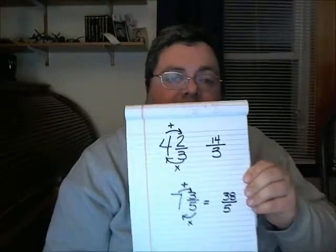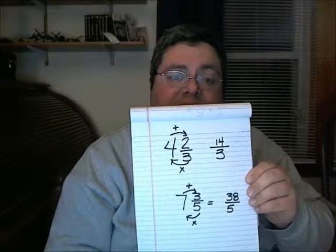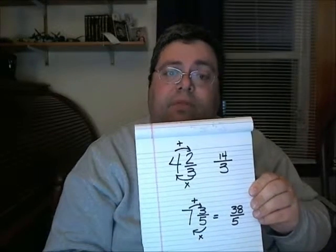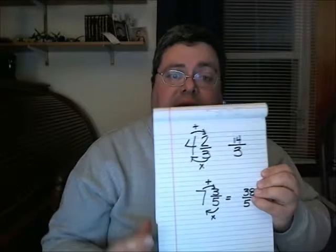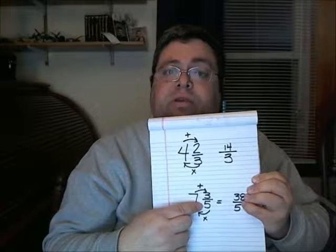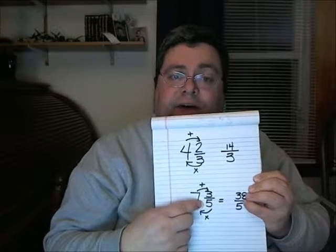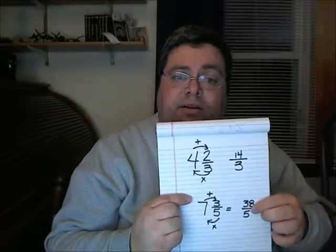Want to try another one? For this next one, let's do a little larger one. Let's try 7 and 3-fifths and see what you can come up with. You may want to hit pause right here. Let's see what you came up with: 7 and 3-fifths. I came up with 38-fifths. 5 times 7 is 35, 35 plus 3 is 38. And originally, all the objects or groups were broken into 5 pieces. 5 times 7 is 35, plus 3 is 38-fifths.